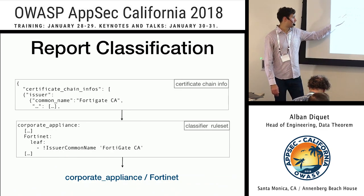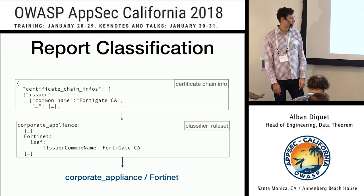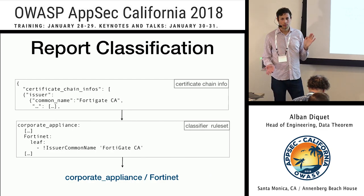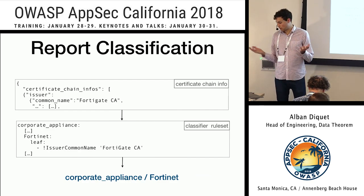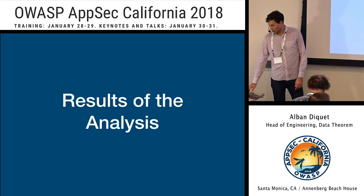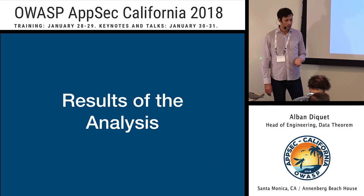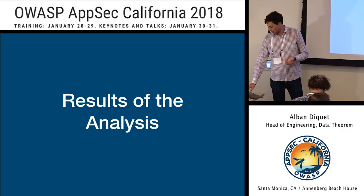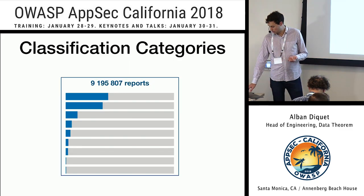That's how the analysis works at a high level. We probably have hundreds of rules that we've built over time as we kept getting more reports from new devices and new things. Now, what did we find? That's probably why everyone is here.